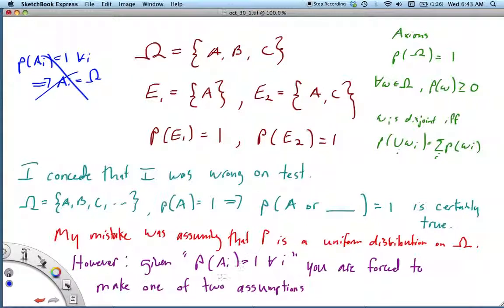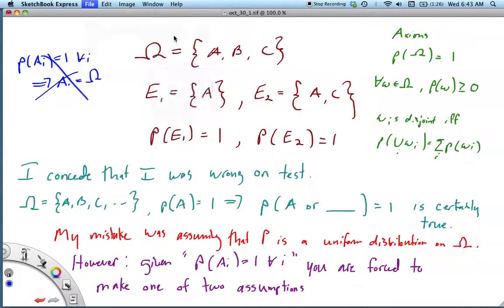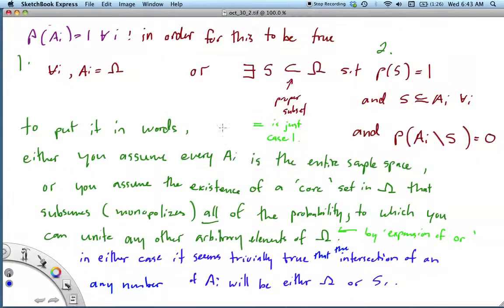However, given our setup that P(Ai) = 1 for all i, you do have to make a pretty major assumption. I've detailed those assumptions here. In order for this to be true, either what I said would have to be true, or...